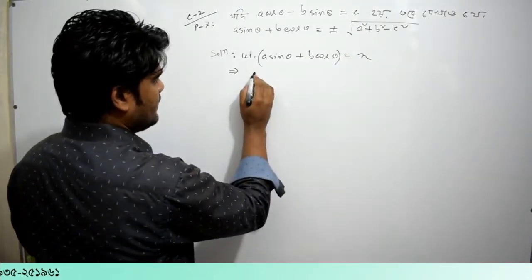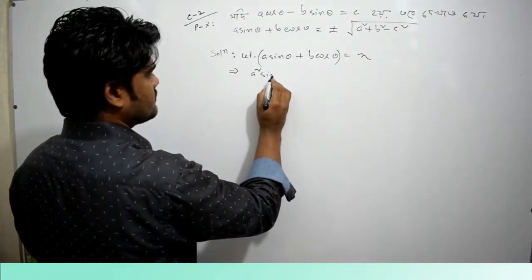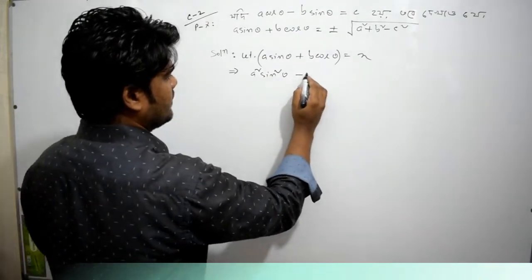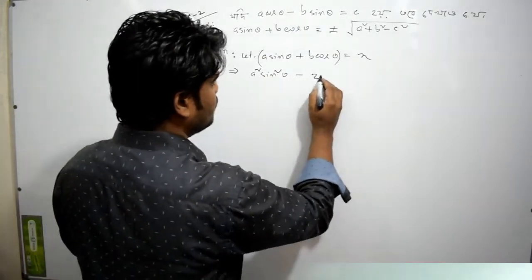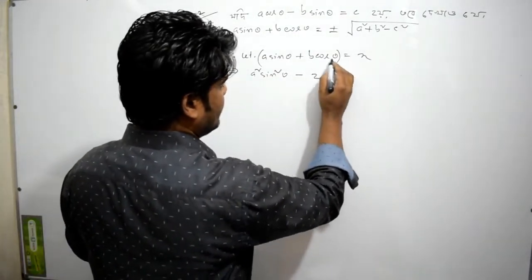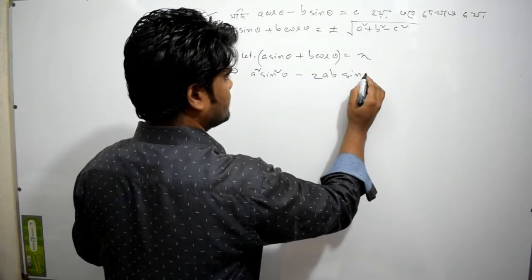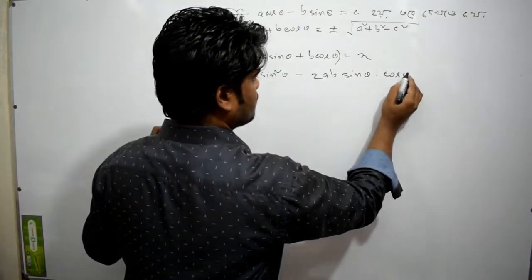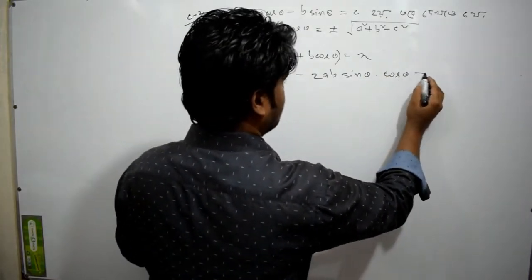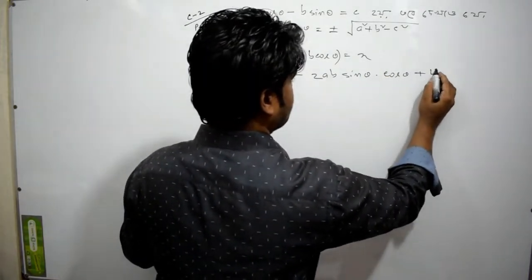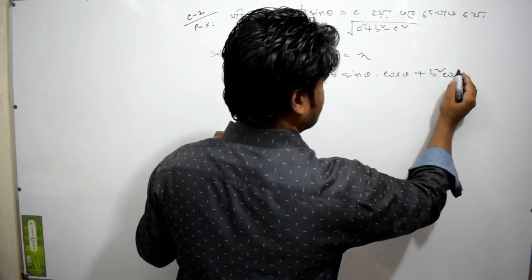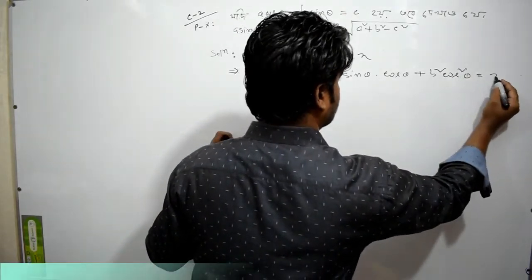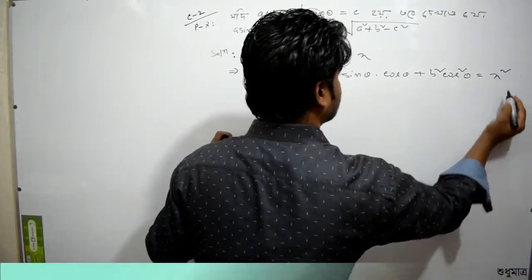a² sin²θ minus 2ab sinθ cosθ plus b² cos²θ equals x² ... (equation 1)